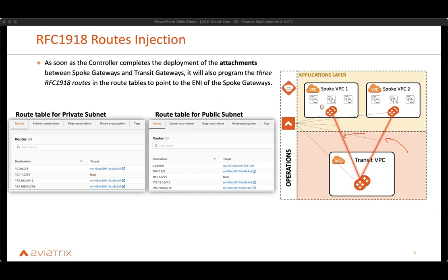Just as a reminder, the VPC router is the first hop router — this is the gateway of the instance. Traffic goes from the instance to the VPC router. These three routes — the 10, the 172, and the 192 — get instantiated whenever the attachment is configured between the SPO and the transit. These routes get installed within the routing table of that VPC router, so the traffic will get sent to the SPO gateway.